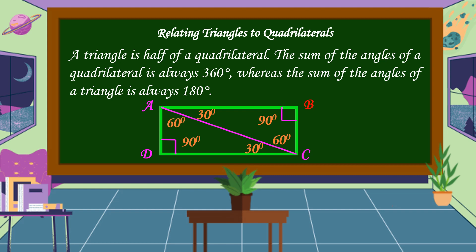If we're going to add the two triangles, their total is equal to 360 degrees. Therefore, a triangle is one-half of a quadrilateral.